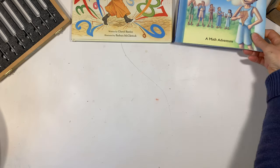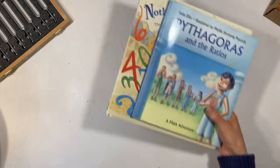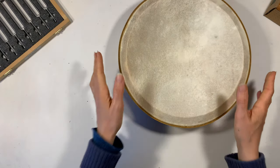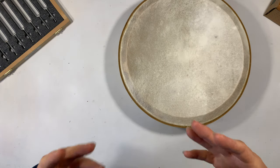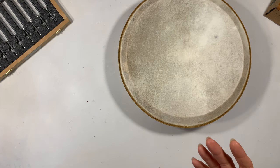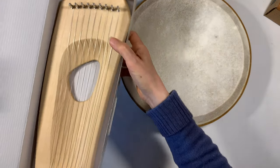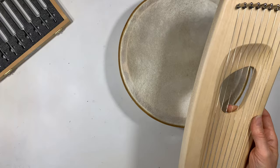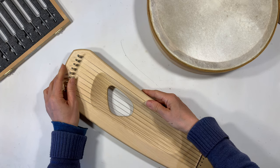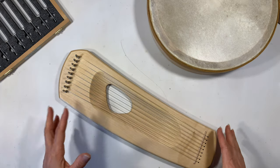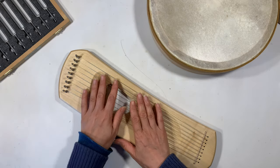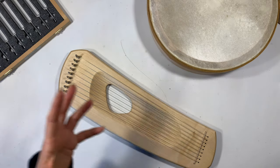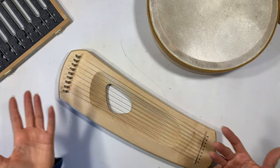Now let me show you some of the musical instruments we're using for this main lesson block. We're trying to get percussion, string, and wind instruments so we can get a feel for how each sounds. For our string instrument, we have a lyre — we wanted something with string so we could listen for those vibrations in a way that's different from other instruments. You could also use a guitar, or make your own using guitar strings strung up on a piece of wood.